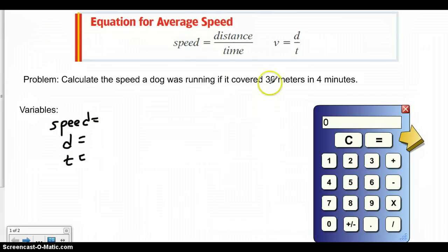In this case I notice up here it's 30 meters, and I know that meters tells us it's a distance. So I'm going to write 30 m. The speed is what we're looking for, so I'm going to put a question mark there. And then time is 4 minutes.